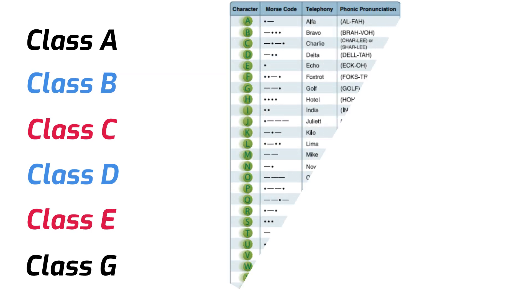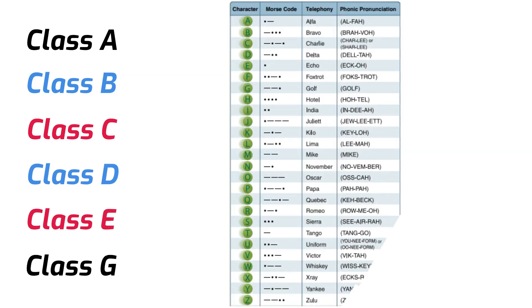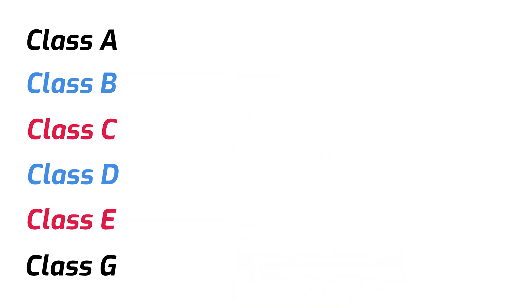By the way, unless you've already done so, you will need to memorize the phonetic alphabet. Don't worry about the numbers or the Morse code — just try to memorize it as soon as possible. Like I said, we have six classes, but we have two types: controlled and uncontrolled.